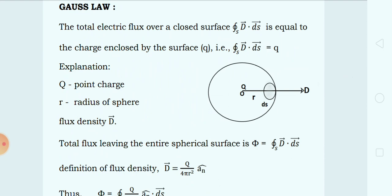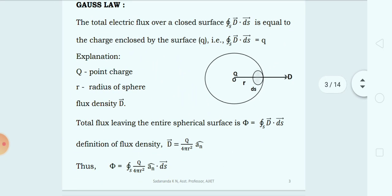When we talk about Gauss Law of Electrostatics, we should know the concept of flux or the electric flux and also the Faraday Law of Electric Flux. We have studied about flux and flux density in the previous session. The definition of flux is the number of lines of force passing normally to the surface. If vector D is the flux density, then flux per unit area is the flux density.